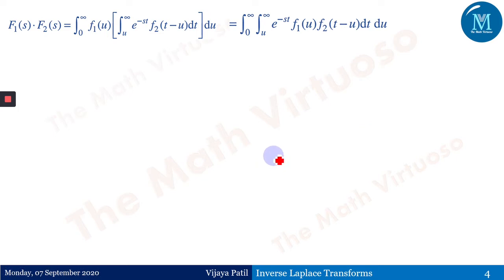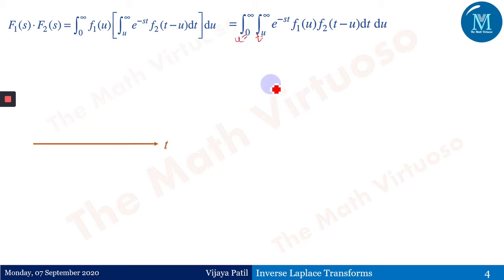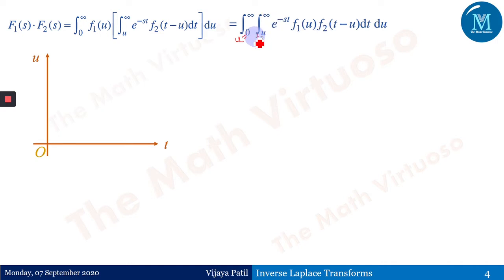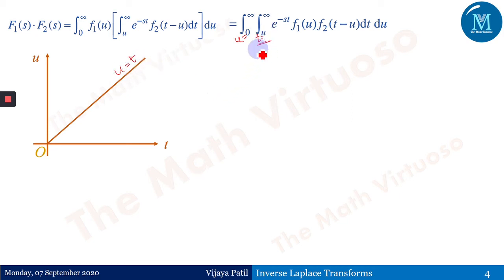Now I want to solve this double integral. We have two variables: t (inner integral) and u (from 0 to infinity). Consider a two-dimensional region with t as the horizontal axis and u as the vertical axis. The inner integral in t runs from u to infinity, so the boundary curve is u = t. That is the line u = t in this plane.